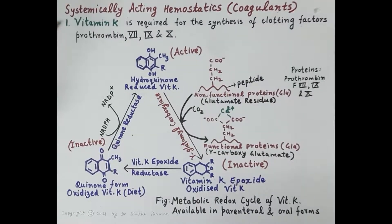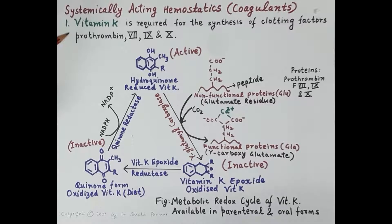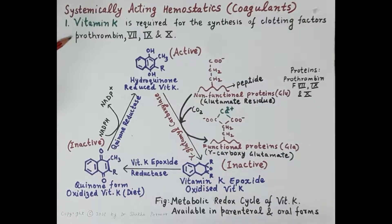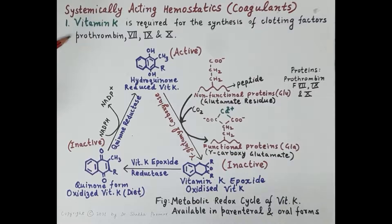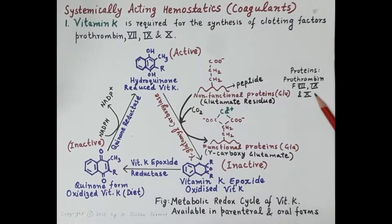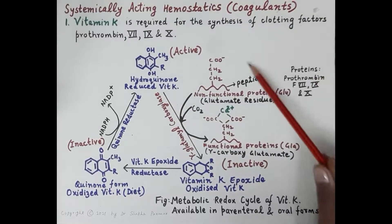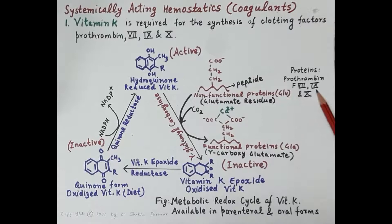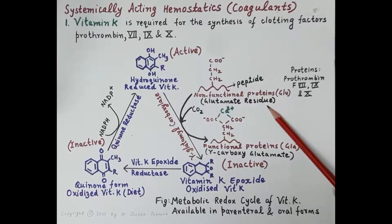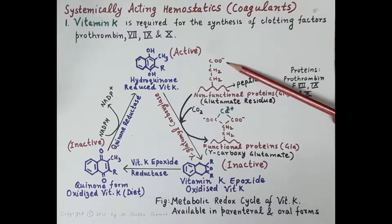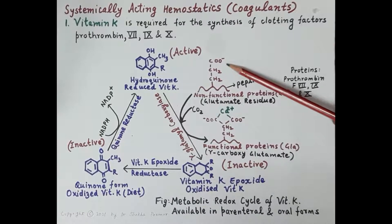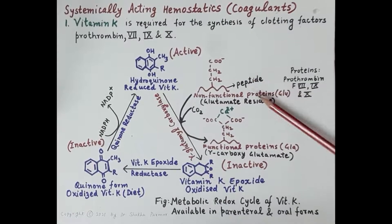Vitamin K is a very important coagulant, essential for the process of clotting because it is required for the synthesis of clotting factors: prothrombin (factor 2), and factors 7, 9, and 10. These clotting factors are proteins synthesized in the liver. They possess a glutamate residue with one carboxyl group and are non-functional in this state. To become functional, they require one more carboxylic group.